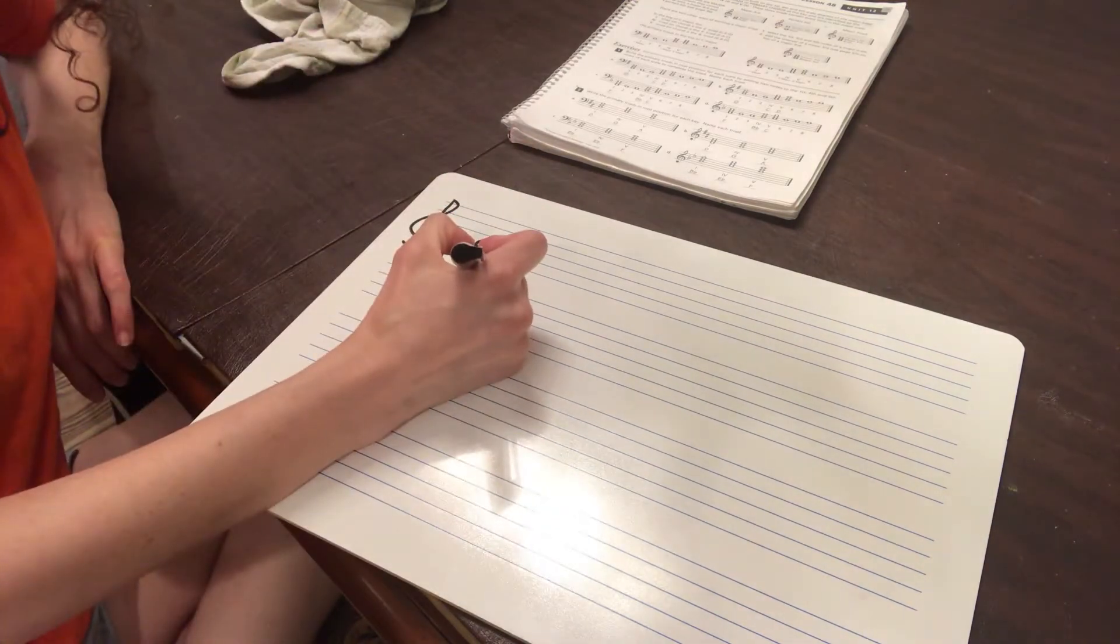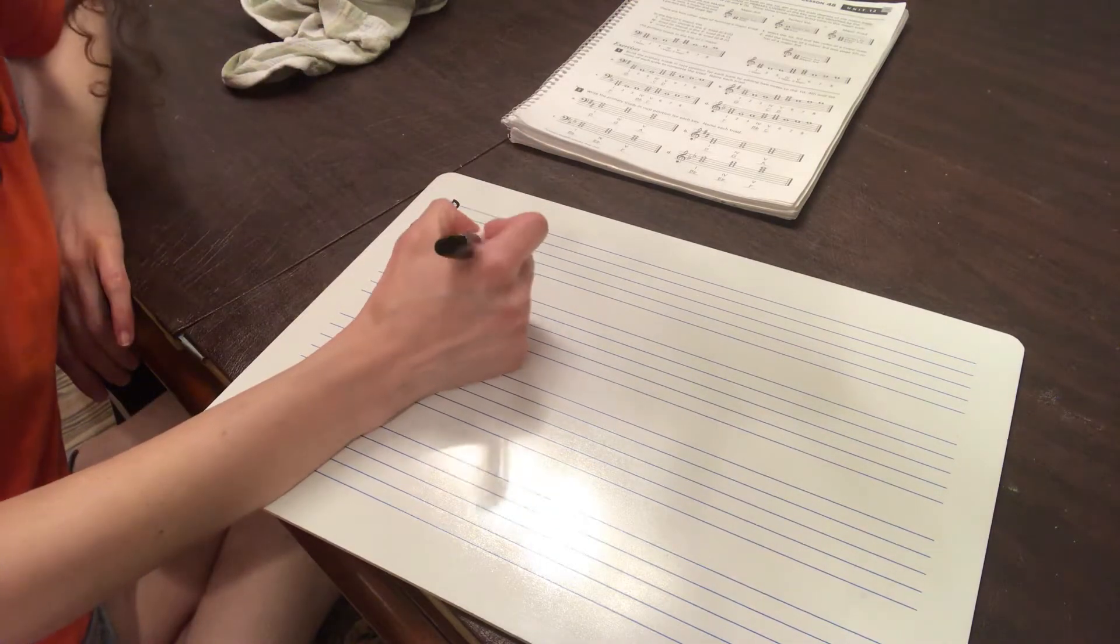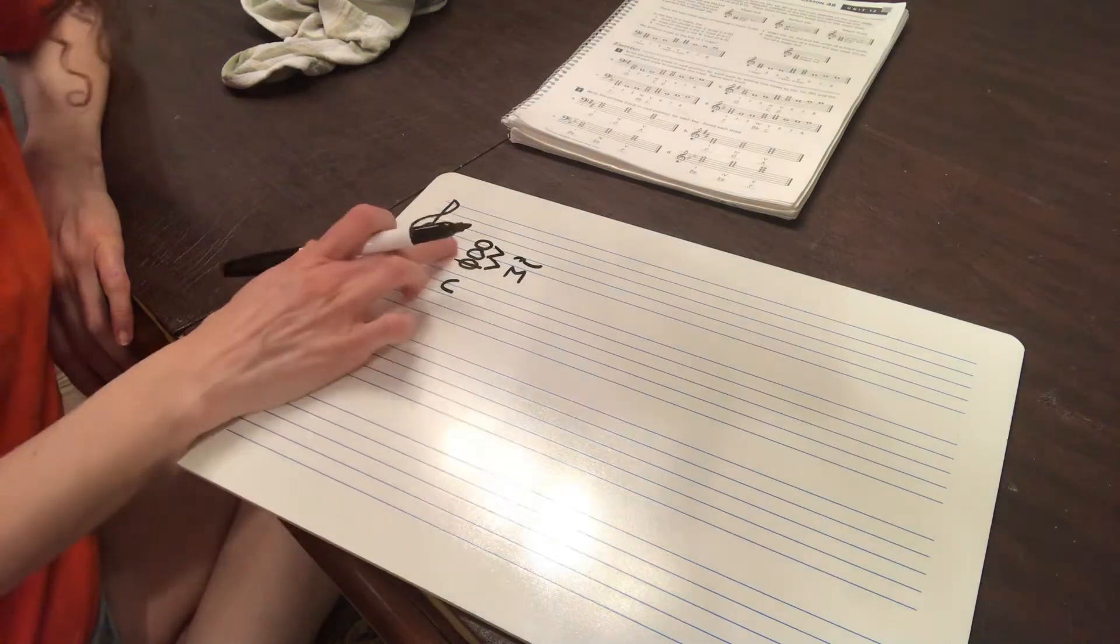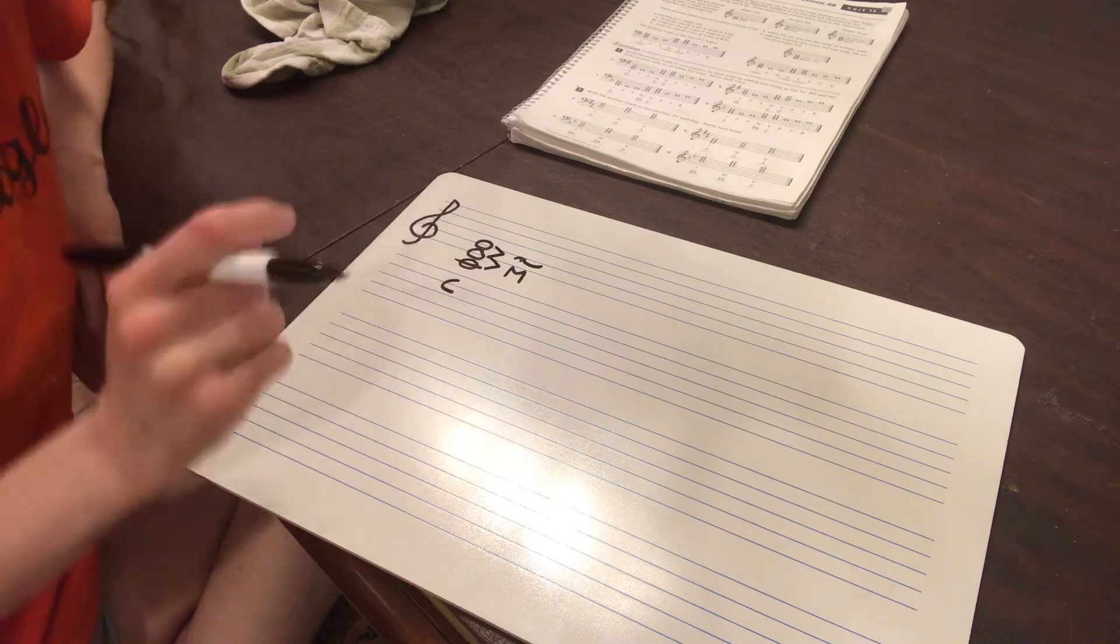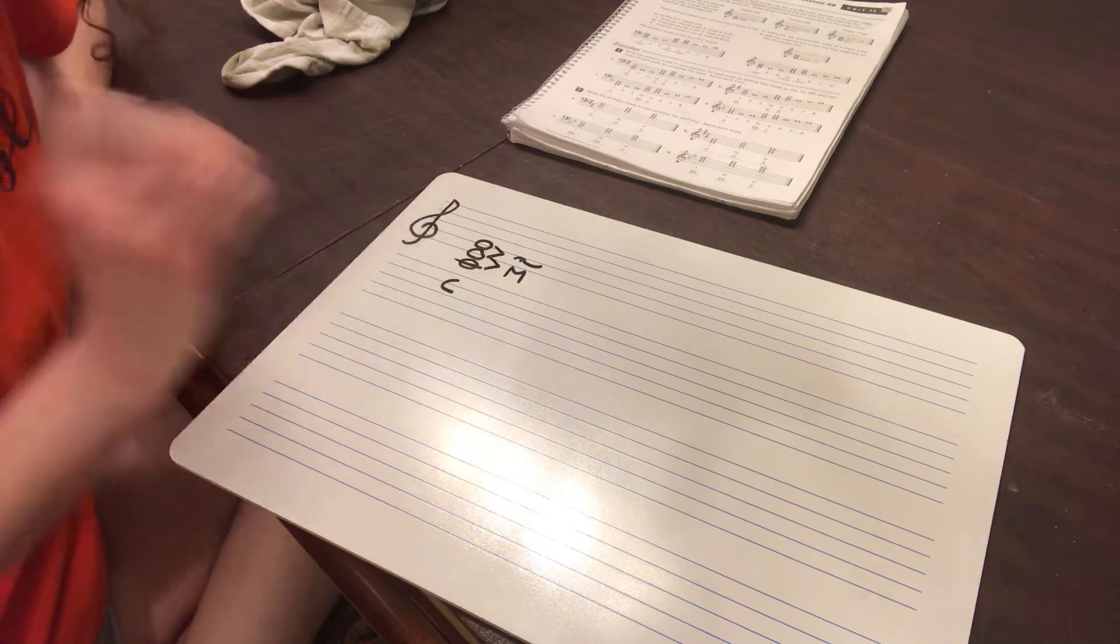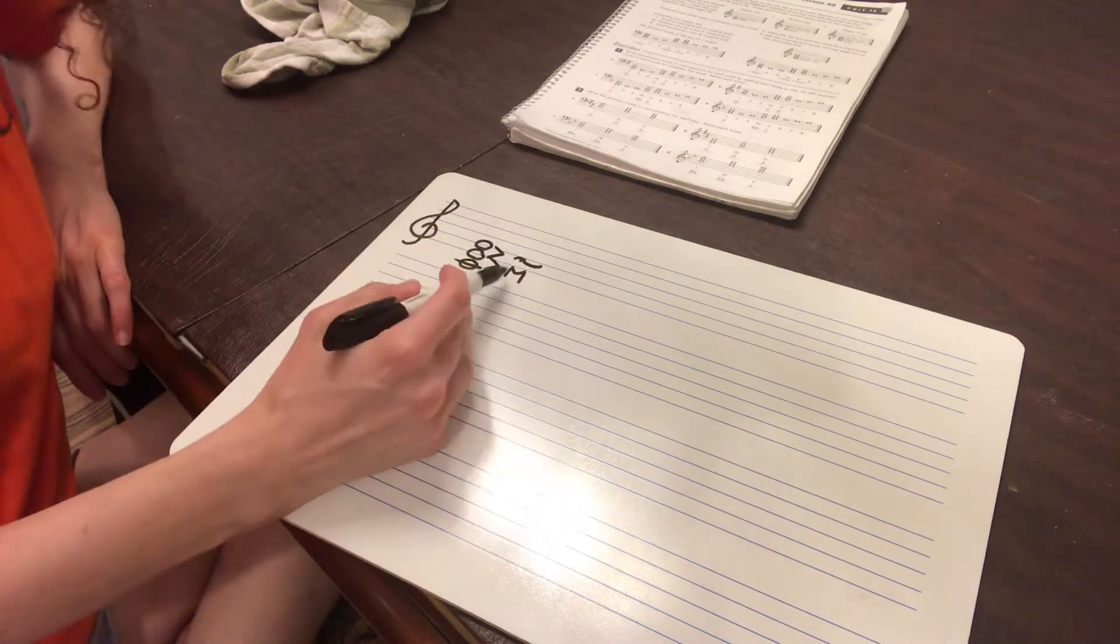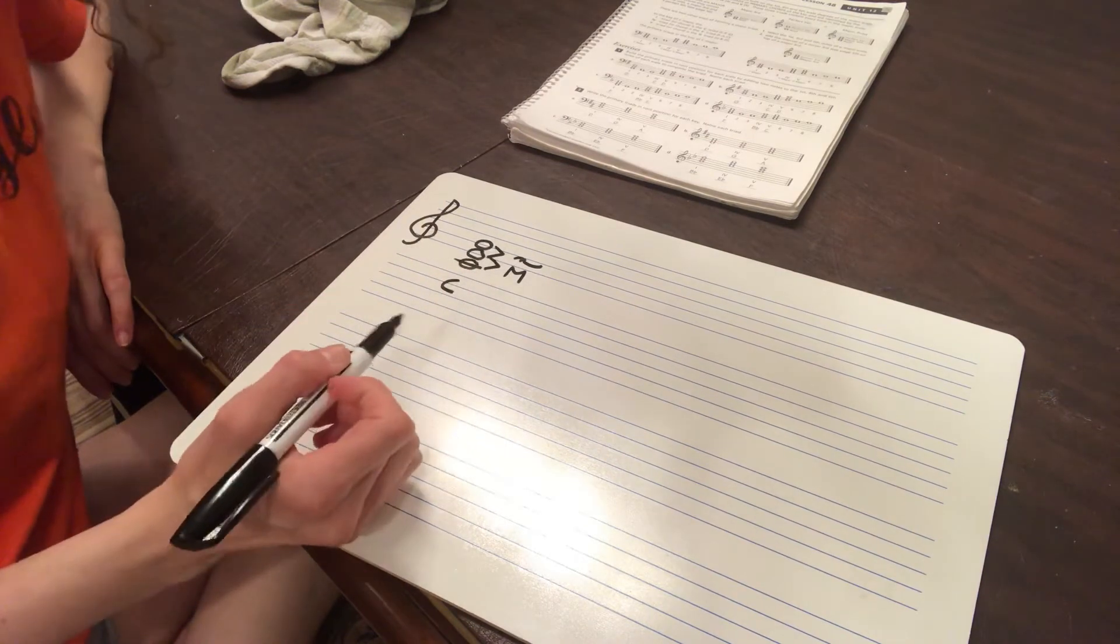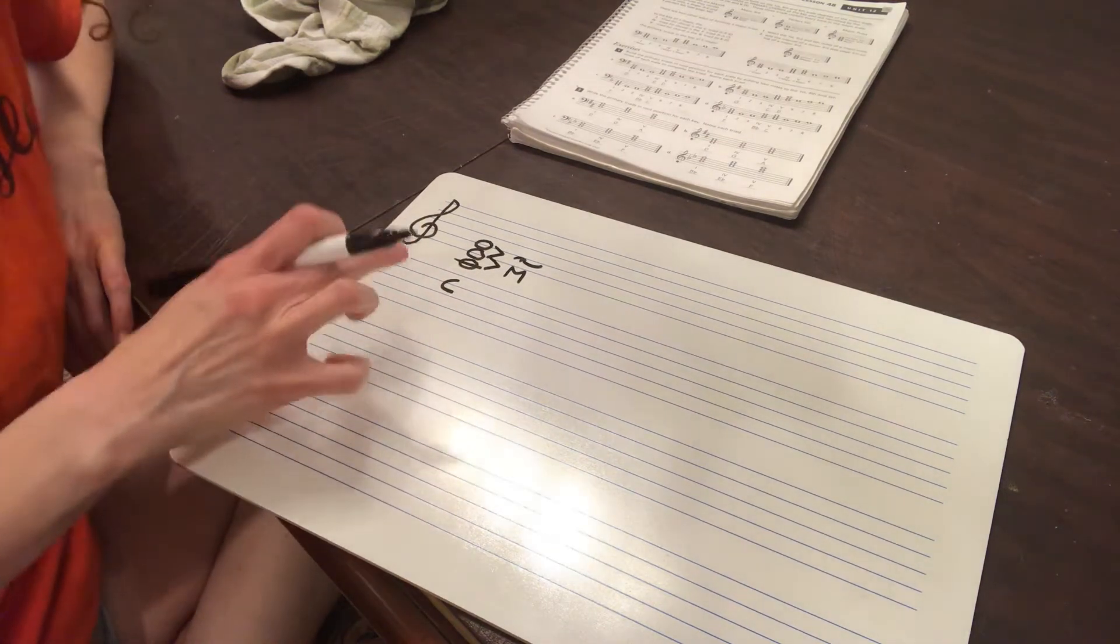Then go from your E to your G, and this should be a minor third. And in the key of E, G should be sharp, but it's not here, and that's what we want. So it's a major third on the bottom, and a minor third on the top creates a major triad.